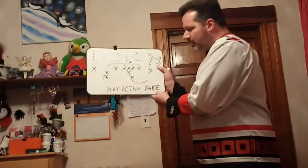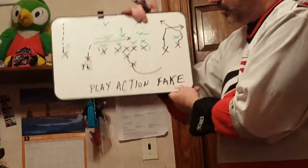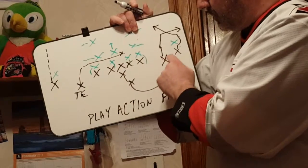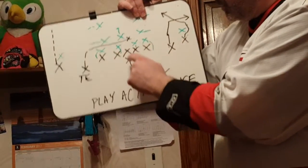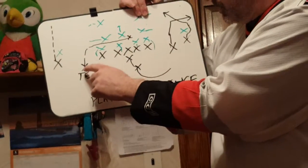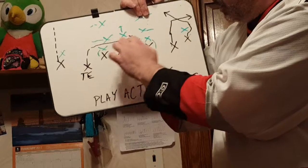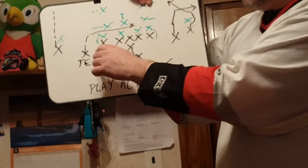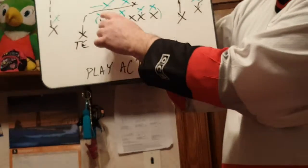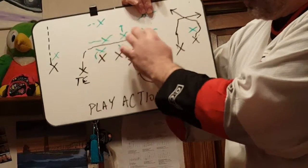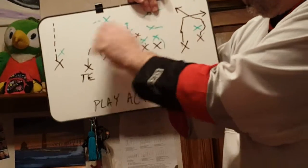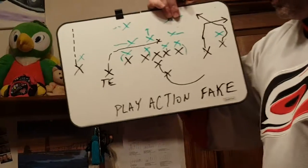The first play I'm going to do is a play-action fake. We line up the offense: wide receivers, the offensive linemen, quarterback, running back, and the tight end. The defense is playing a 4-3 — four defensive linemen, three linebackers, and four defensive backs.